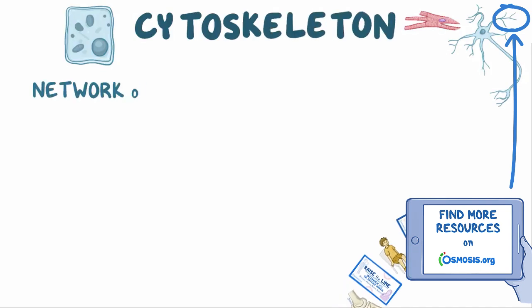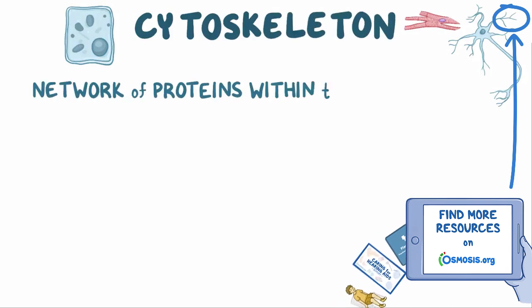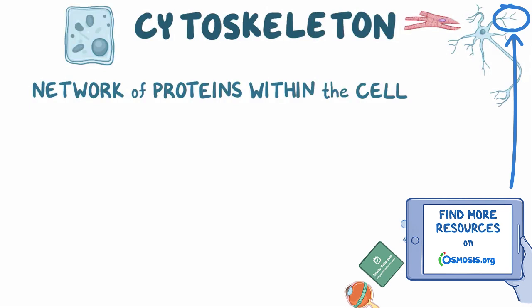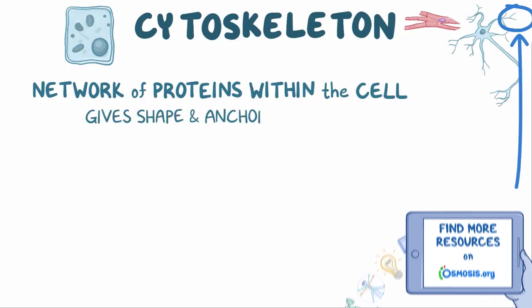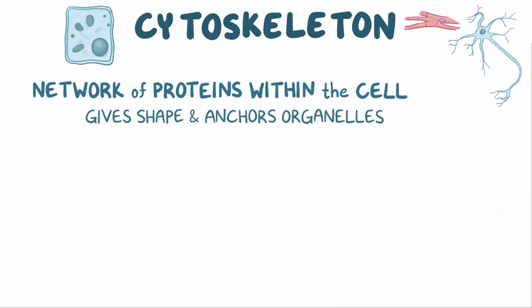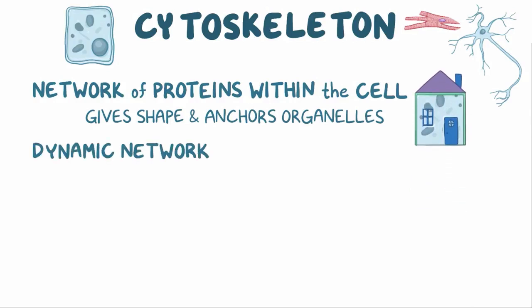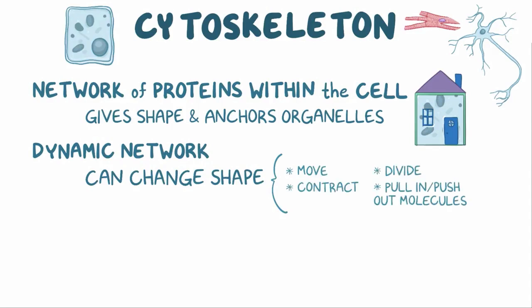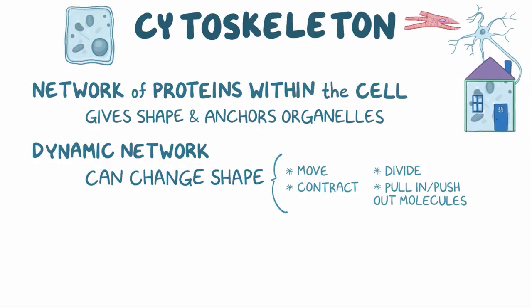The cytoskeleton is a network of proteins within the cell. It gives each cell its shape and anchors organelles in place, keeping everything sturdy, kind of like the frame for a house. But it's also a dynamic network, which can change shape when the cell wants to move, contract, divide, or pull in or push out molecules. Imagine if your house could do that — maybe it'd get up and walk away during an earthquake.